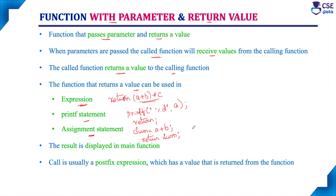The function that returns a value can be used in an expression, printf statement, or assignment statement. The result is displayed in the main function — it will receive the result from the called function and display it on the output screen. The call is usually a postfix expression, which has a value that is returned from the function, meaning the function expression will be printed after calculation only. It receives the result and then prints it on the output screen.